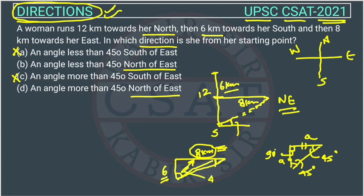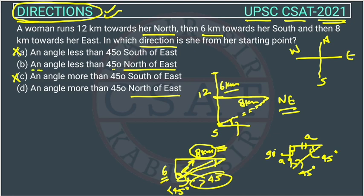This angle will be greater than 45 degrees. If this is greater than 45 degrees, then the remaining angle will be less than 45 degrees, because the total is 90. They are asking this angle only — in which direction is she from the starting point. So the angle is less than 45 degrees, in the northeast direction. The answer is option B.